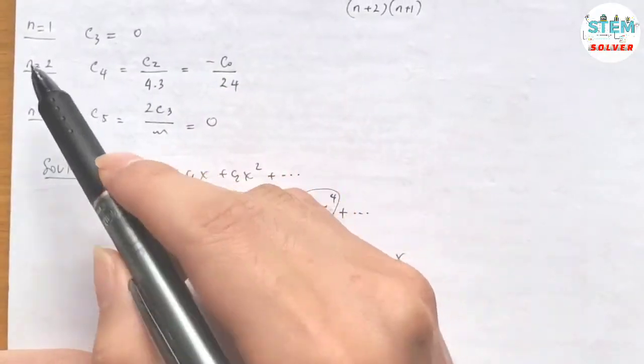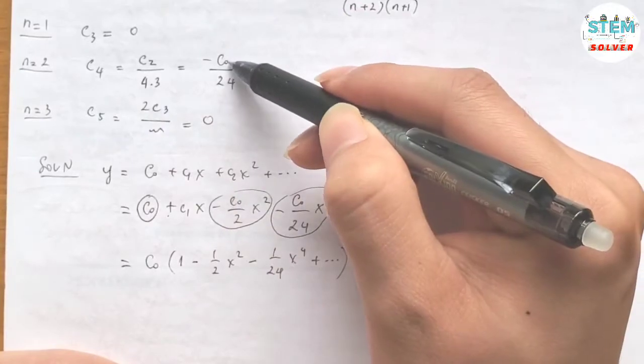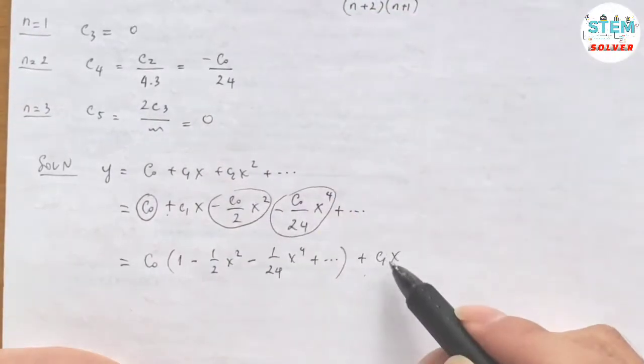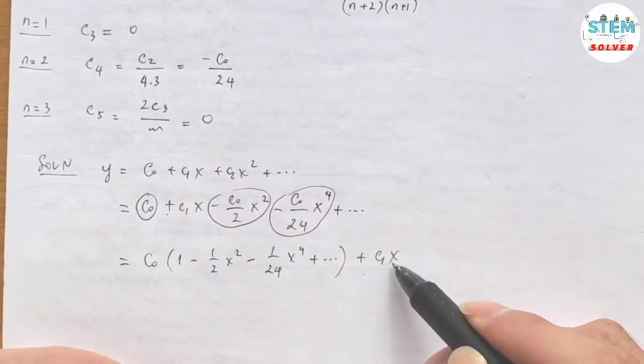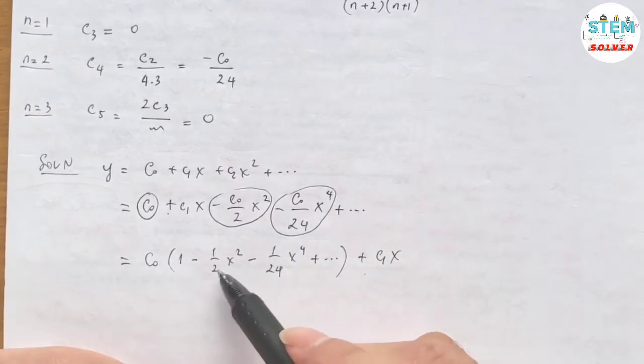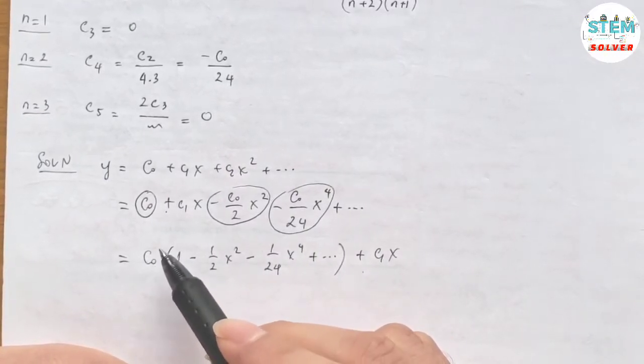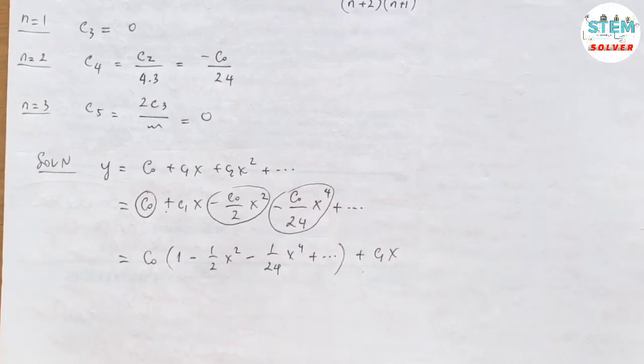So back to this one. So the rest of the power series will be in terms of c0 and 0. So for this one, you have only 1 x. And for this one, it's gonna be in terms of c0. So this is your final solution. That's it.